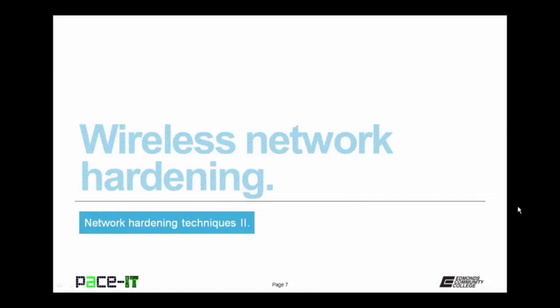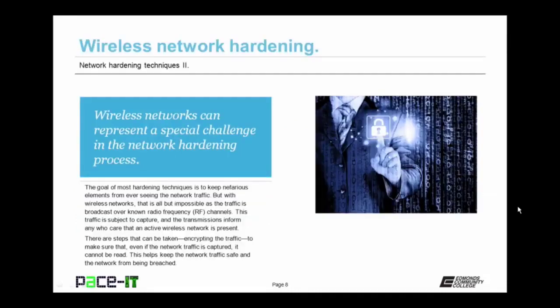Let's move on to wireless network hardening. Wireless networks can represent a special challenge in the network hardening process. The goal of most hardening techniques is to keep nefarious elements from ever seeing the network traffic. But with wireless networks, that is all but impossible as traffic is broadcast over known radio frequency channels. This traffic is subject to capture, and the transmissions inform any who care that an active wireless network is present. There are steps that can be taken, such as encrypting the traffic, to make sure that even if the network traffic is captured, it cannot be read.